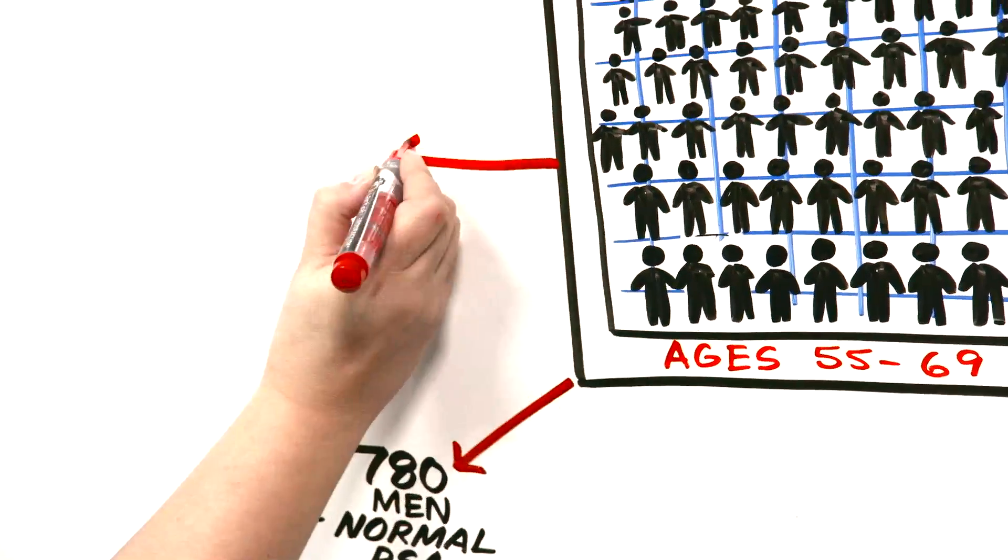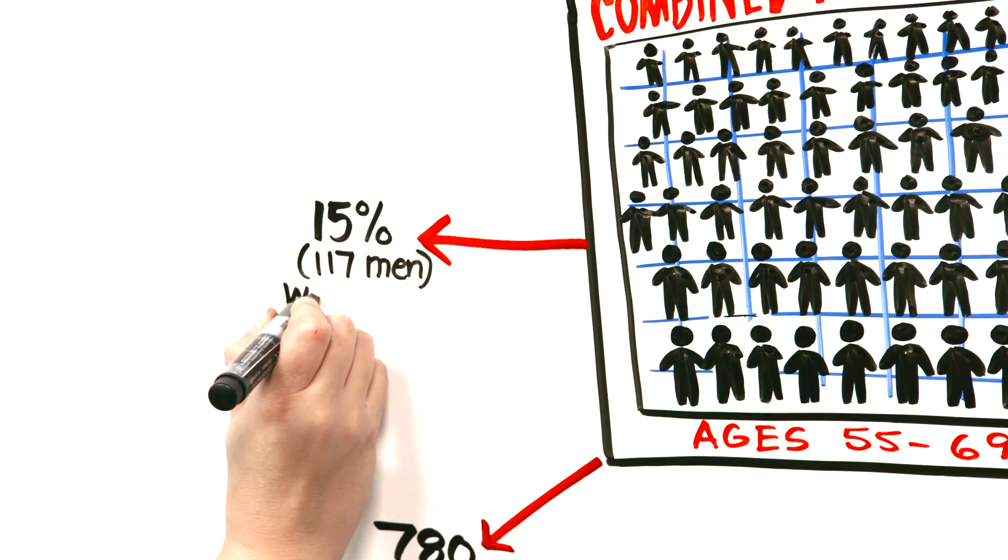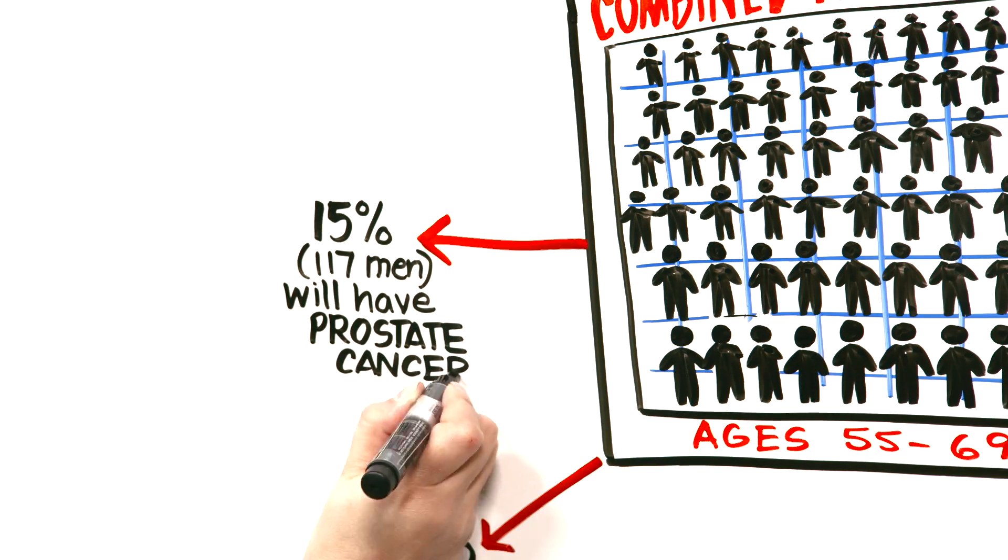However, the recently released prostate cancer prevention trial showed approximately 15%, or about 117 men, will actually have prostate cancer and be falsely reassured.